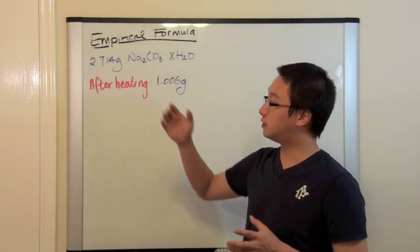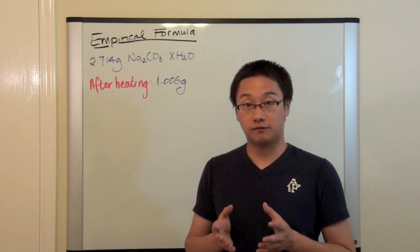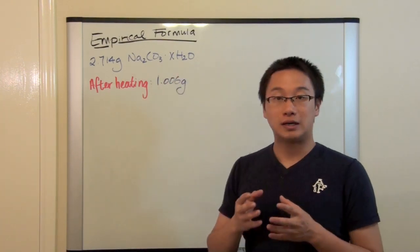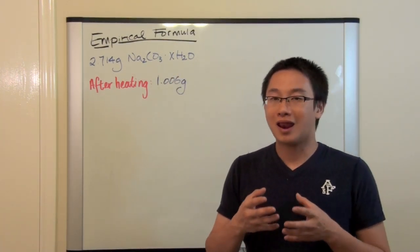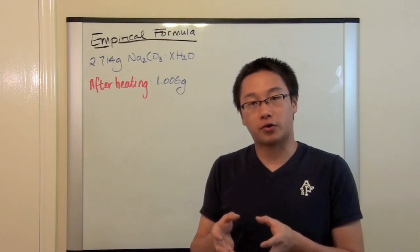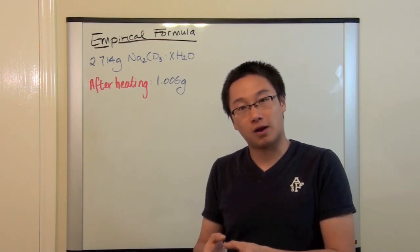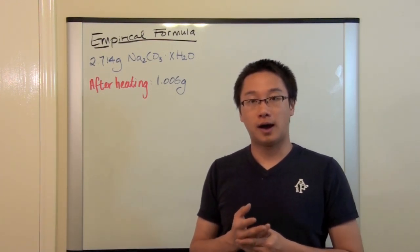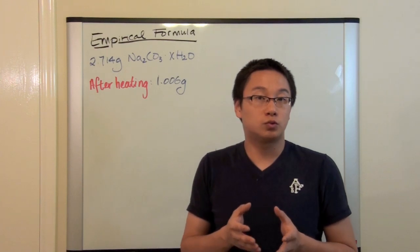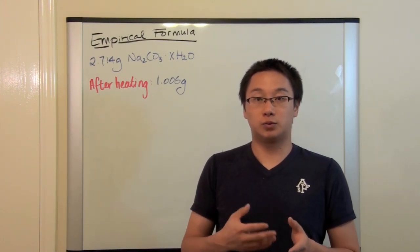You can go online and find some pictures of hydrates. But let's go back to this question. The question is that we are given the formula Na2CO3 — sodium carbonate — with some amount of H2O. We do not know how many H2O molecules are being attracted by this ionic compound, and this is our goal. Our goal is to find out how many water molecules are attracted by sodium carbonate. We are given the original sample of the hydrate, measured at 2.714 grams.